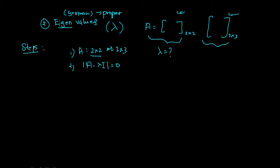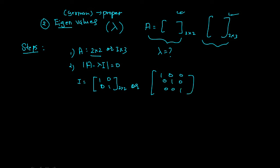Now what are these terms — determinant, A, I? I is very simple: it is [1, 0; 0, 1] for 2×2, or [1,0,0; 0,1,0; 0,0,1] for 3×3. Basically it is a diagonal matrix where all the diagonal values are equal to 1. That is the value of I.